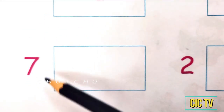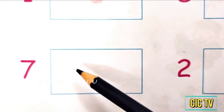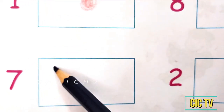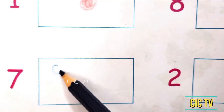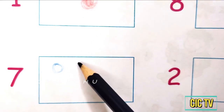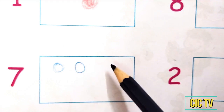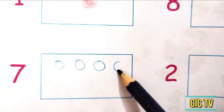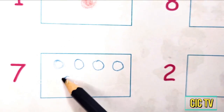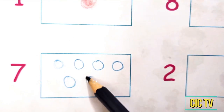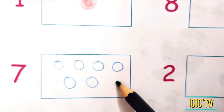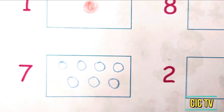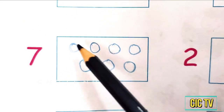Next: 7. 7 is here. How many dots are we going to draw? 7. 1, 2, 3, 4, 5, 6, 7. 7 dots.